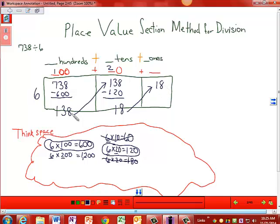So I'm asking myself, 6 times something will get me close to 18. Well, 6 times 2 is 12. 6 times 3 is 18. That's my answer. That's my product. So 6 times 3. And I'm going to put what it equals right underneath here and then subtract. 18 minus 18 is nothing.